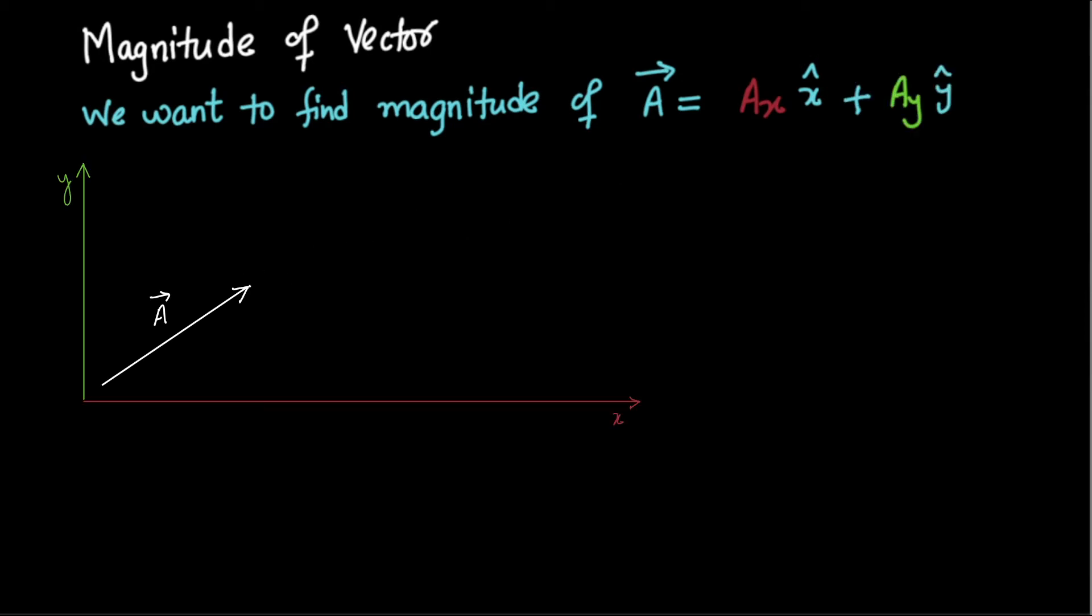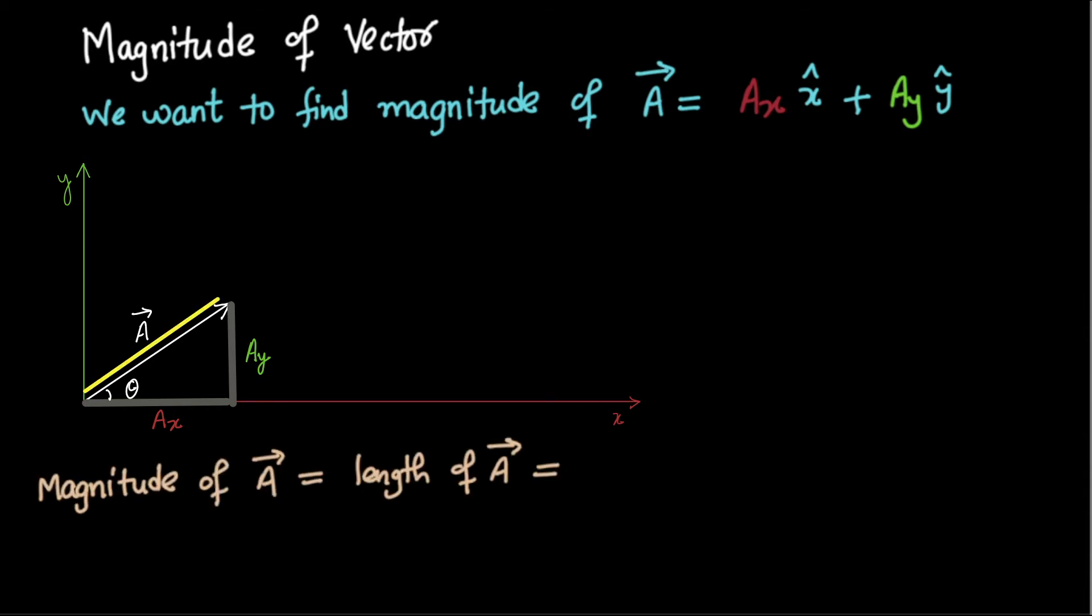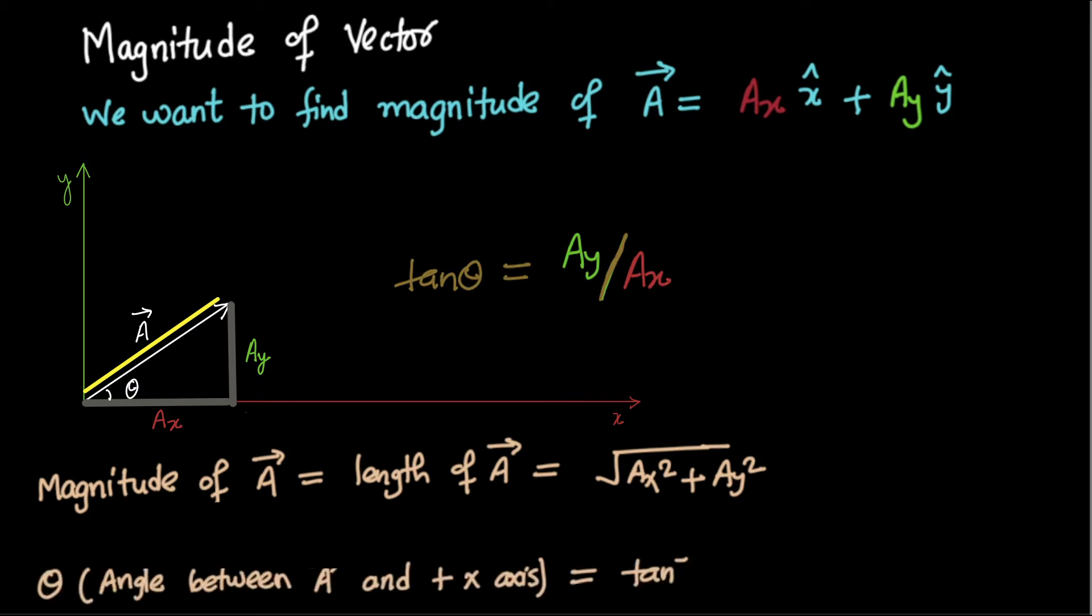Suppose we have a vector a, then this length is ax and this length is ay. Magnitude of vector a is this length, that is square root of ax square plus ay square, and tan theta is ay by ax. Theta is the angle between vector a and the positive x-axis.